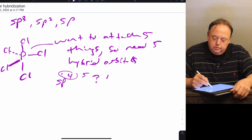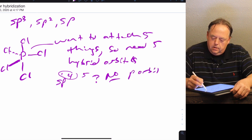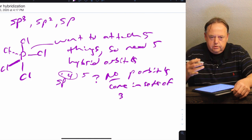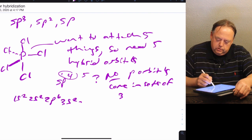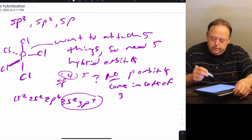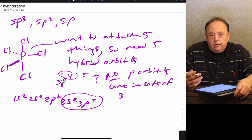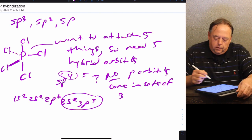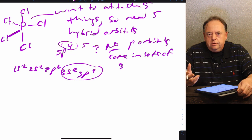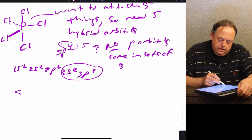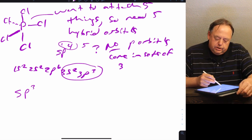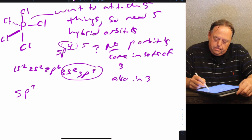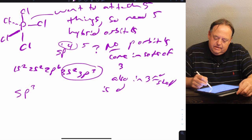The answer is no, because p orbitals come in sets of three. Phosphorus has the configuration 1s2 2s2 2p6 3s2 3p3, so it would be using the 3s and 3p orbitals — and there are only three p orbitals. So you can't make sp4. But you do have to mix five orbitals, so where's the fourth orbital going to come from? You only have one s and three p orbitals in the third shell.